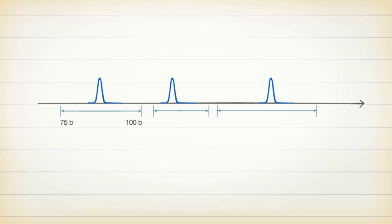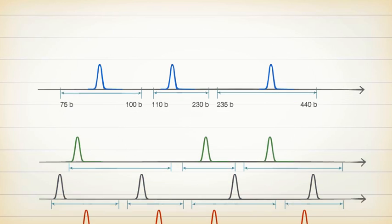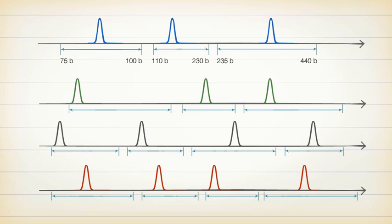However, when fragment size ranges overlap totally or even partially, you could not identify which peak corresponded to which fragment. This is where fluorescent multiplexing comes in.